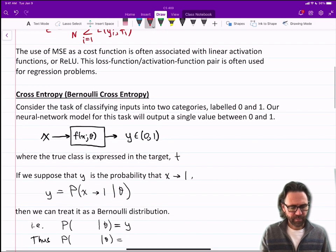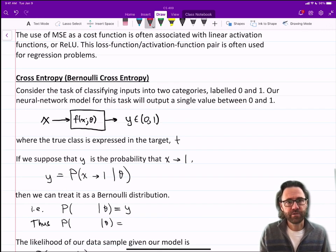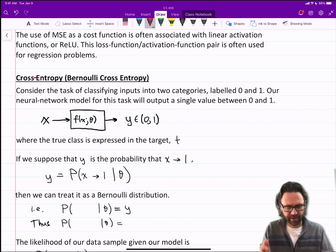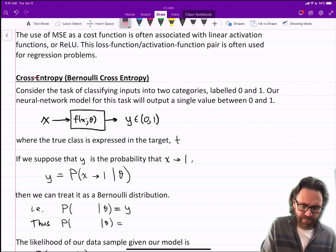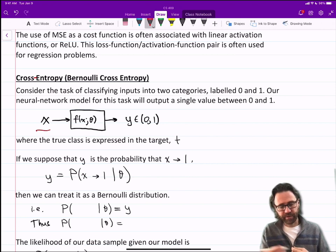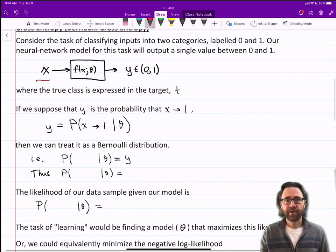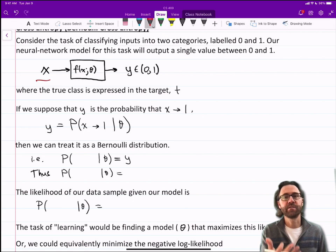The second cost function I'd like to talk about is cross-entropy, also called Bernoulli cross-entropy. Consider the task of classifying inputs into two categories, labeled 0 and 1. Our neural network model for this task will output a single value between 0 and 1. X is the input, the neural network outputs a y in the interval 0 to 1, and the true class expressed in the target is either 0 or 1.